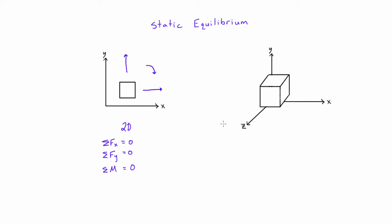In three dimensions it's a similar process, but we'll need six different equations of equilibrium. If there's a net force in the x direction, the object will translate in x; same for y. And if there's a net force in the z direction, the object could slide in z. So we already have three translational equations of equilibrium in 3D.